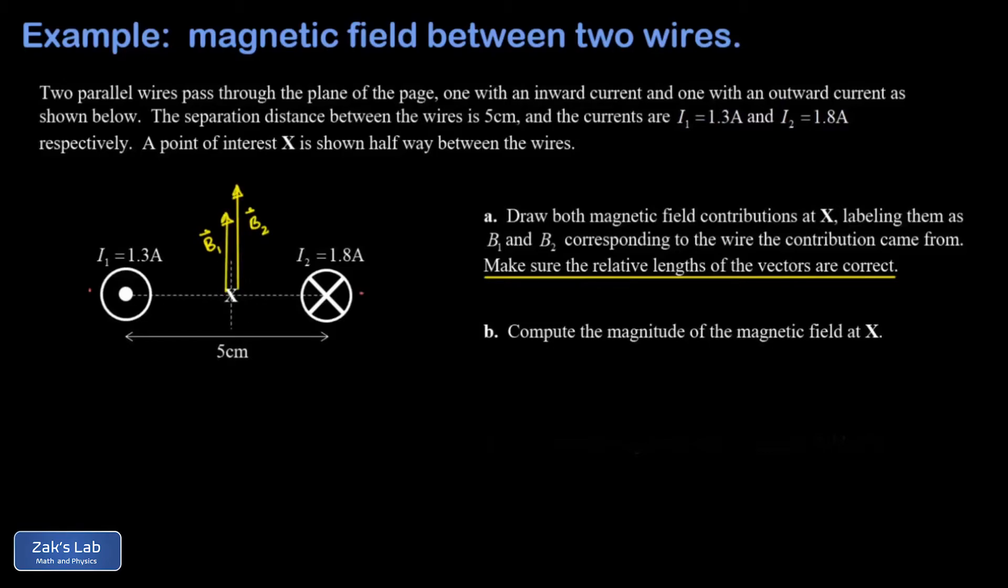The total magnetic field at the point of interest is just the vector sum of those two magnetic field vector contributions. These vectors point in exactly the same direction, so we just add their magnitudes to get the total field at that point. We have to recall the formula for the magnetic field generated by a wire, and that's mu-naught i over 2 pi r.